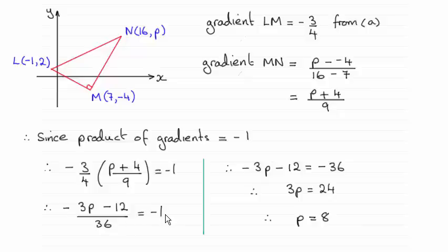We multiply both sides by 36 leaving me with this line and you just solve it to get p equals 8.